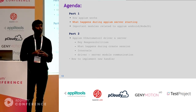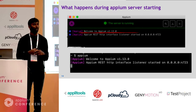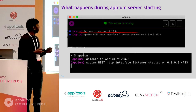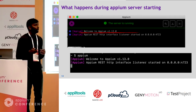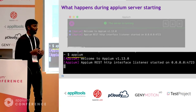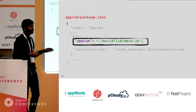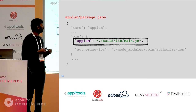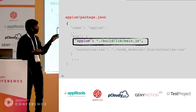What happens during the Appium server starting? If you're starting the Appium server from the GUI or from the command line, these are the general logs you see. We need to understand what happens when this piece of logs gets executed. If you're running Appium from the command line, the command you use is 'appium.' How does it know what to do? You have that mapping available in the package.json of the Appium module — inside the bin object, the appium command is mapped to main.js.